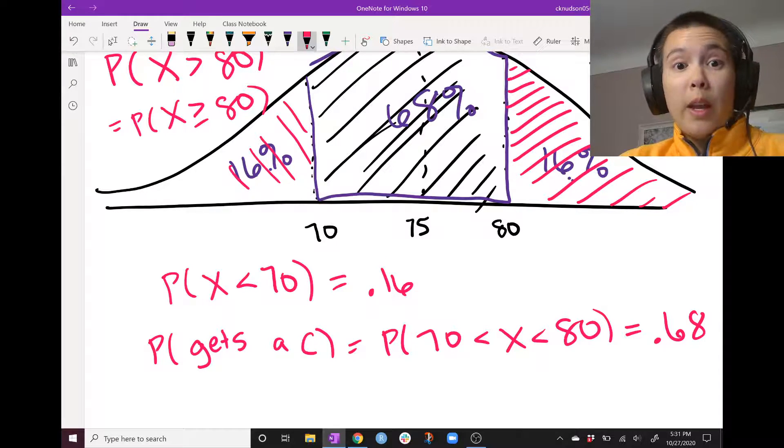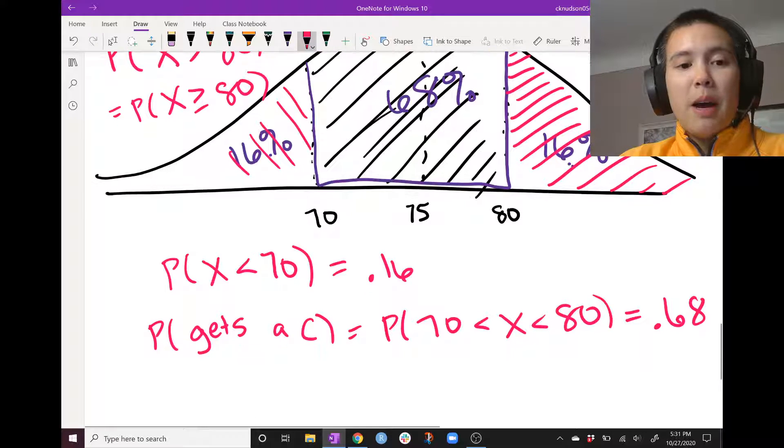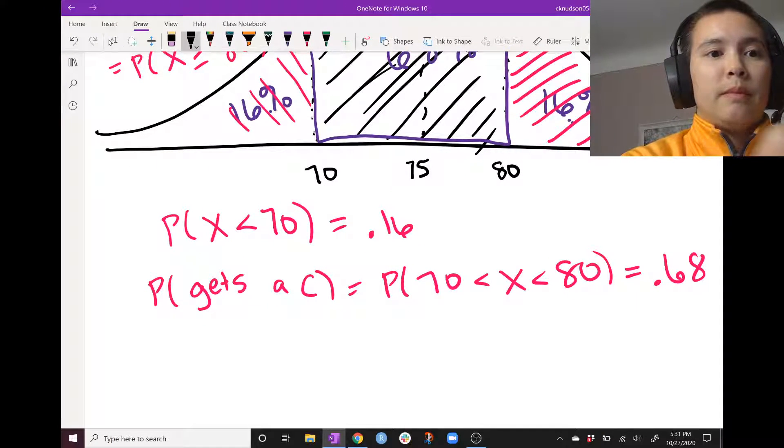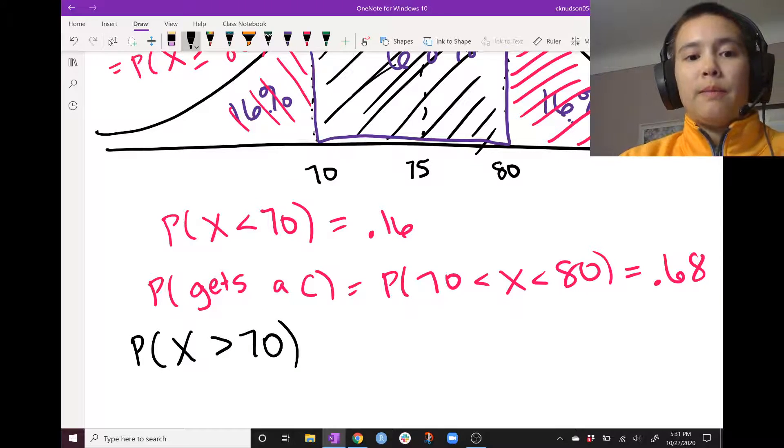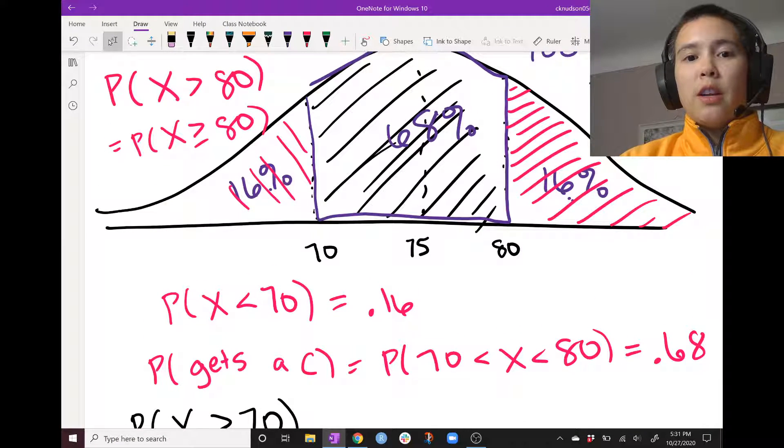How many, like what proportion of people are going to get a lollipop? So we're looking for the probability that X is greater than 70.